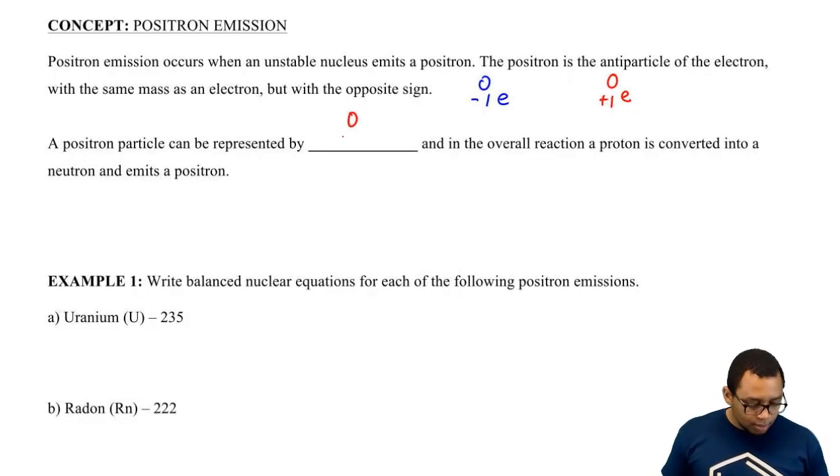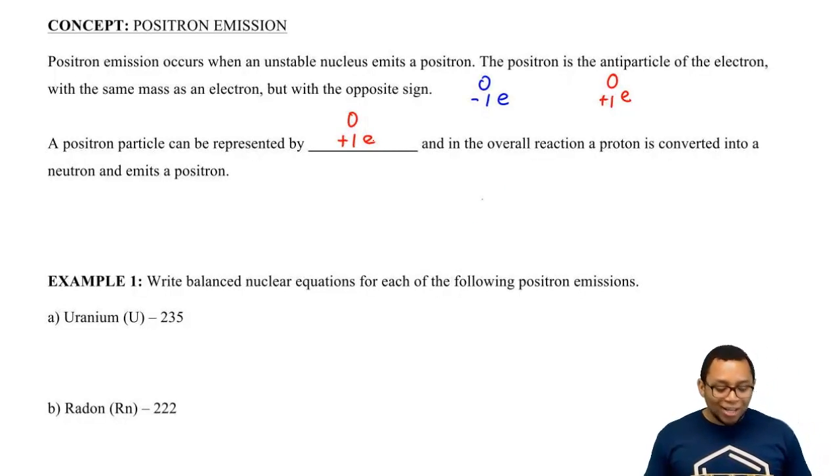So here's our positron. Now because we're talking about the word emission again, emission would mean decay, which means that this positron would be a product.